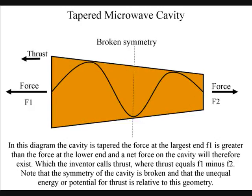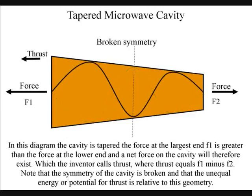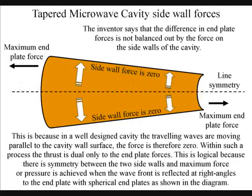Note that the symmetry of the cavity is broken and that the unequal energy or potential for thrust is relative to this geometry. The inventor says that the difference in end plate forces is not balanced out by the force on the side walls of the cavity, because in a well-designed cavity the travelling waves are moving parallel to the cavity wall surface, so the force is therefore zero. Within such a process, the thrust is due only to the end plate forces.